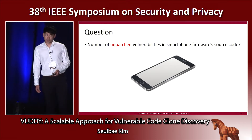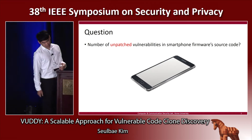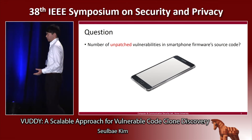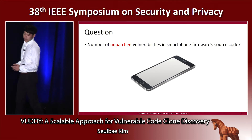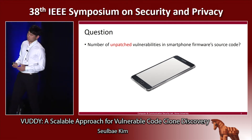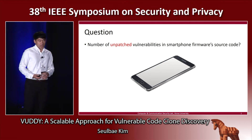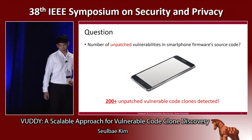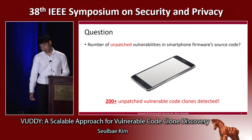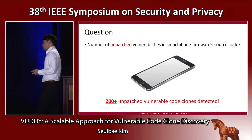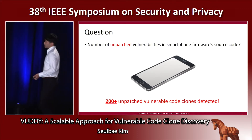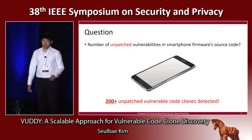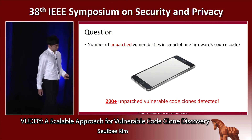Before getting started, I want to ask you a question. How many unpatched known vulnerabilities do you think you have in the firmware of your smartphone? Not the unknown vulnerabilities, but the known vulnerabilities. In my smartphone, through the use of our approach, I could find more than 200 unpatched CVE vulnerabilities in the firmware. So it's a lot more than we can normally expect.